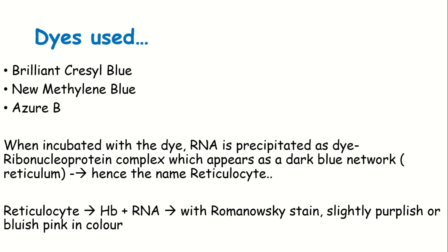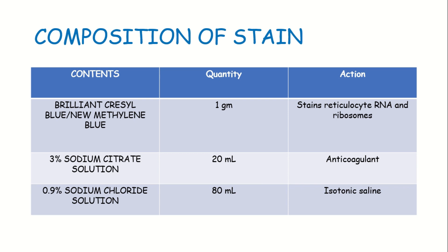Now, regarding stain composition or how the stain is prepared: for stain preparation, we use 1 gram BCB or 1 gram NMB dissolved in 0.9% sodium chloride isotonic saline solution, plus 20 ml sodium citrate solution. BCB or NMB stains the amino ribosome.